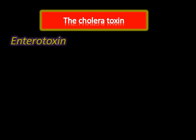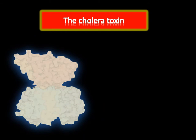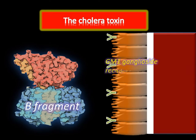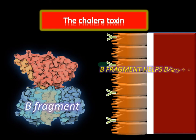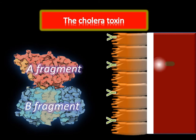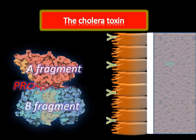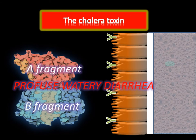Cholera toxin is an enterotoxin. It is protein in nature and heat labile, meaning it is destroyed by heat. It consists of two fragments, A and B. Fragment B helps in binding to the GM1 ganglioside receptors on the surface of intestinal epithelial cells. Fragment A is active and enters the cell, activating cyclic AMP concentration as adenylate cyclase increases, causing hypersecretion of water and electrolytes into the lumen of the intestine.